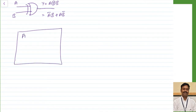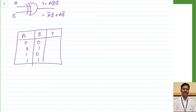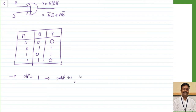Let me explain using the truth table. The inputs and outputs are: when both inputs are 0, output is 0; when one input is 1 and the other is 0, output is 1; when both inputs are 1, output is 0. That means the output will be equal to 1 only when an odd number of inputs is equal to 1.